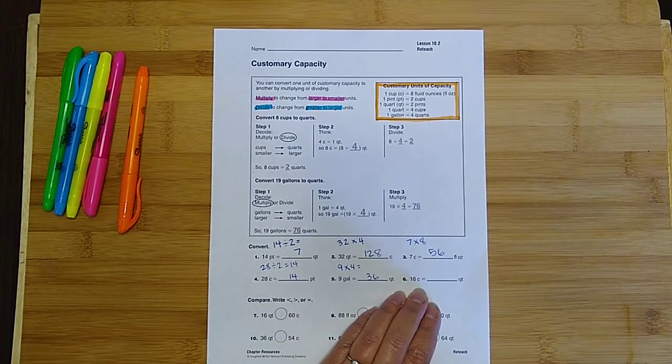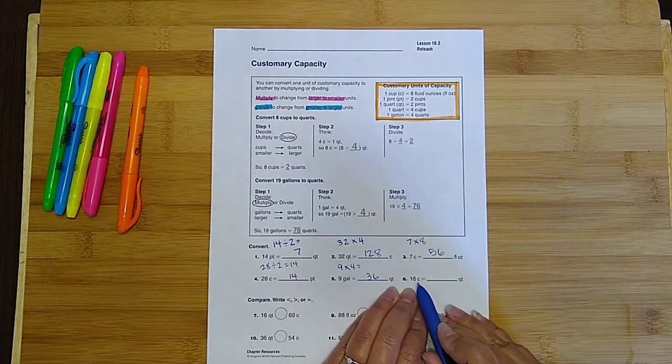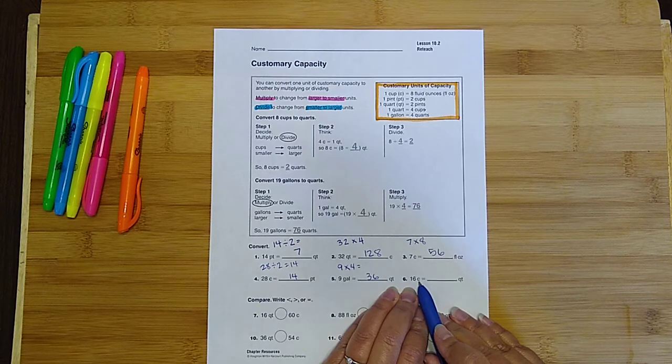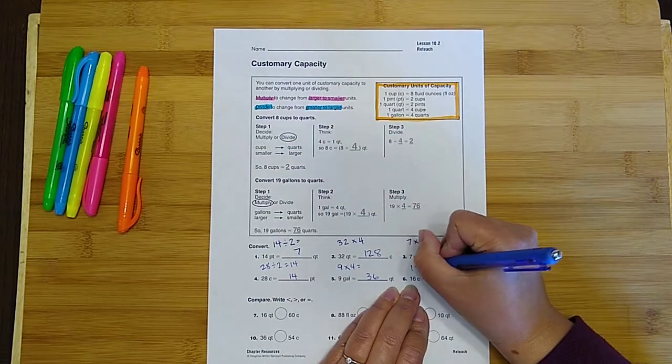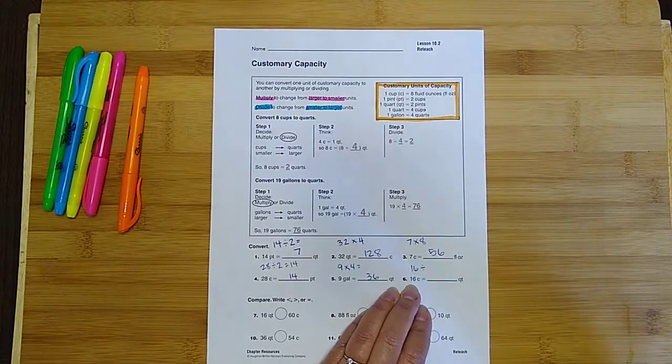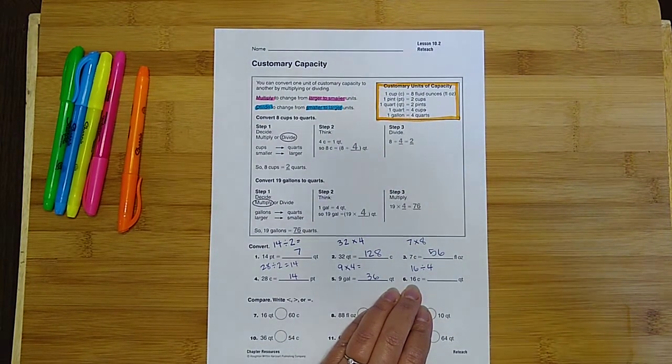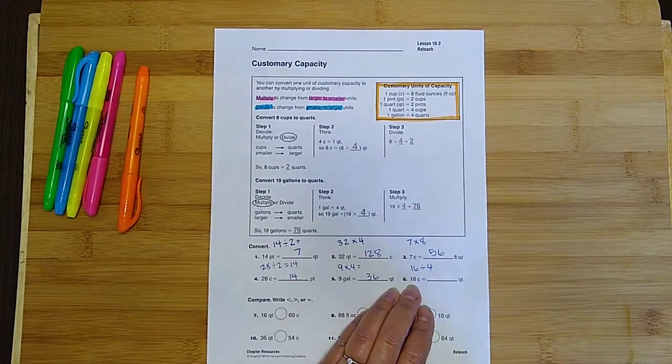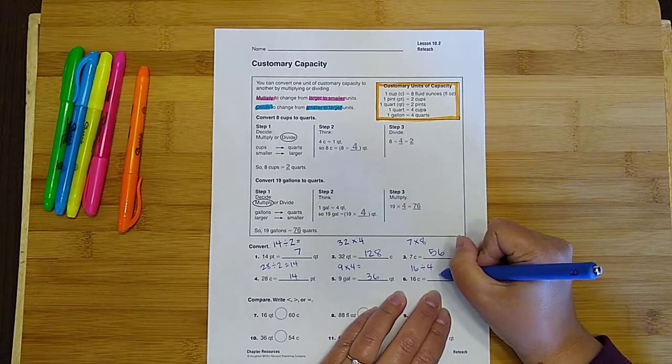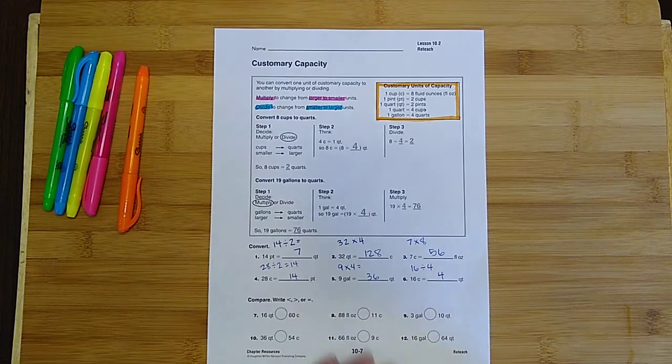And then on number six, we had 16 cups, and since we're going from cups to quarts, it is going from smaller to larger, which again we want to divide. So we're going to go 16 divided by 4, because there are four cups in one quart. 16 divided by 4. Can you do that math in your head? Yep, it is 4, because 4 times 4 is 16, and that's just an inverse.